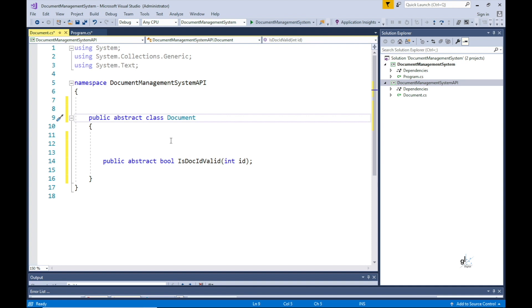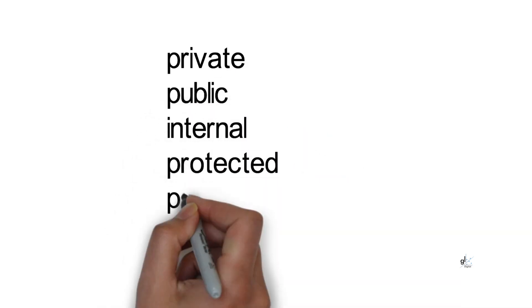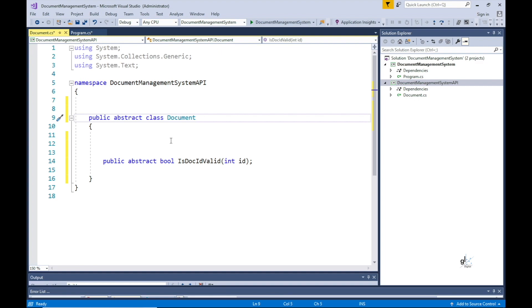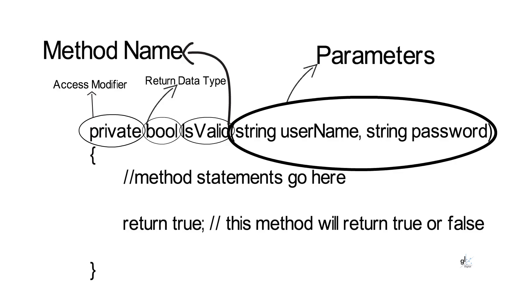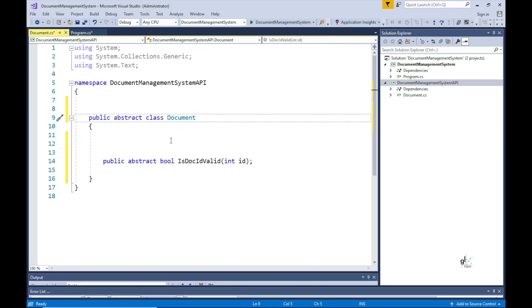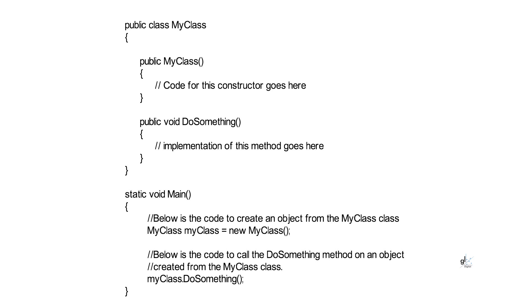Methods can have the following access modifiers: private, public, internal, protected, protected internal, or private protected. A method can return a value defined as a C-sharp data type using the return keyword, which immediately terminates code execution within the method and returns control to the calling code. A method can also simply implement one or more statements without returning a value. When called on an object, the method name is followed by empty brackets if it has no parameters, or brackets containing parameters delimited by commas.